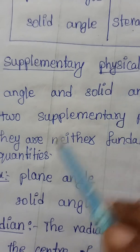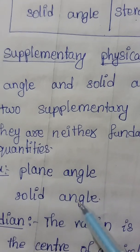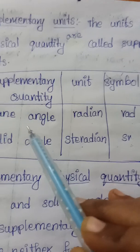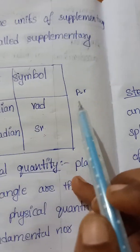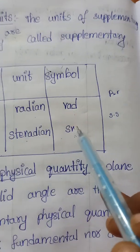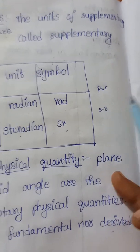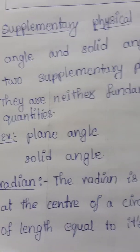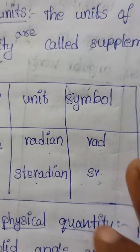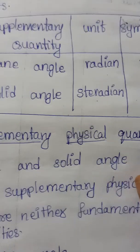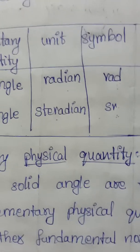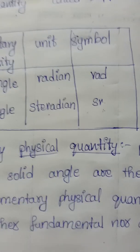So to summarize: supplementary physical quantities are plane angle and solid angle, with units radian and steradian respectively. I hope you got a clear idea regarding supplementary physical quantities. If you like this video, kindly share and subscribe to my channel. Thank you.